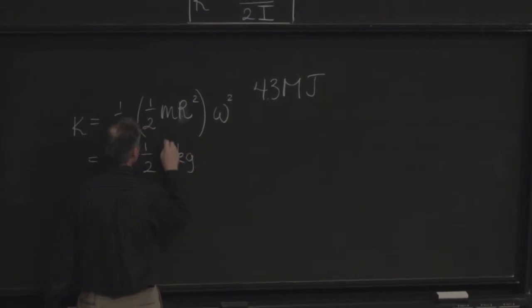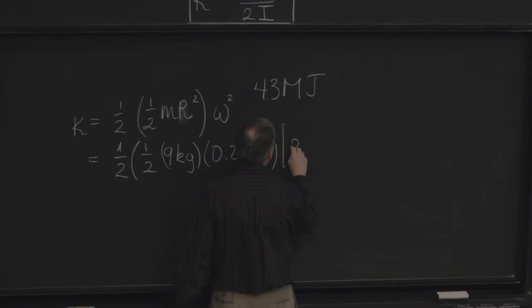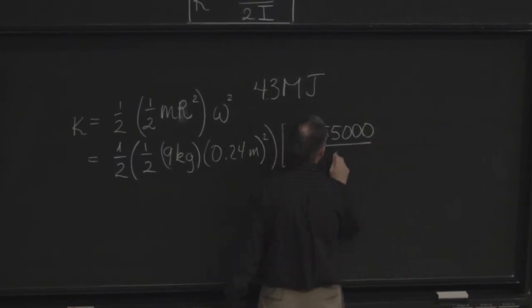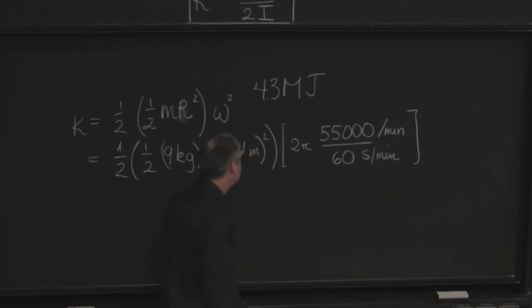9 kilograms, radius 24 centimeters, so 0.24 meters squared. That's the moment of inertia. And omega is 2 pi times 55,000. That's revolutions per minute. So 2 pi times the number of revolutions is the number of radians. But this is per minute, so I need to divide by 60 seconds per minute and square.